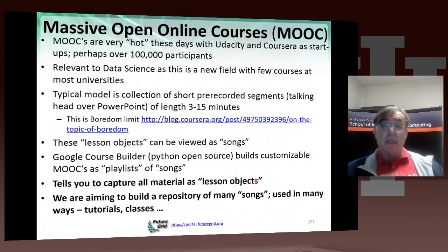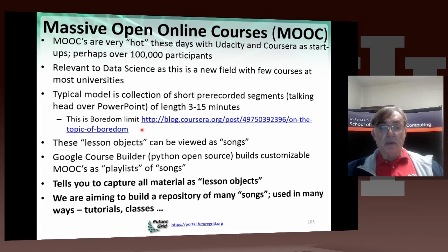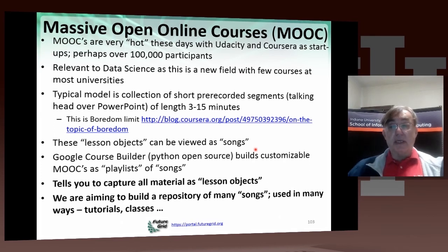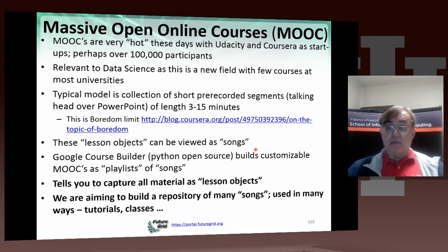MOOCs are relevant to data science because it's a new field with few courses at any given university. The way MOOCs are done is illustrated by this offering of X-informatics — prerecorded lessons of 3 to 15 minutes in length. This length has to do with attention limits described on the Coursera blog. These 3 to 15 minute entities are lessons which can be taken independently, though you'd generally take them in order, and you can rest at the end of a lesson and continue the next when you want to.